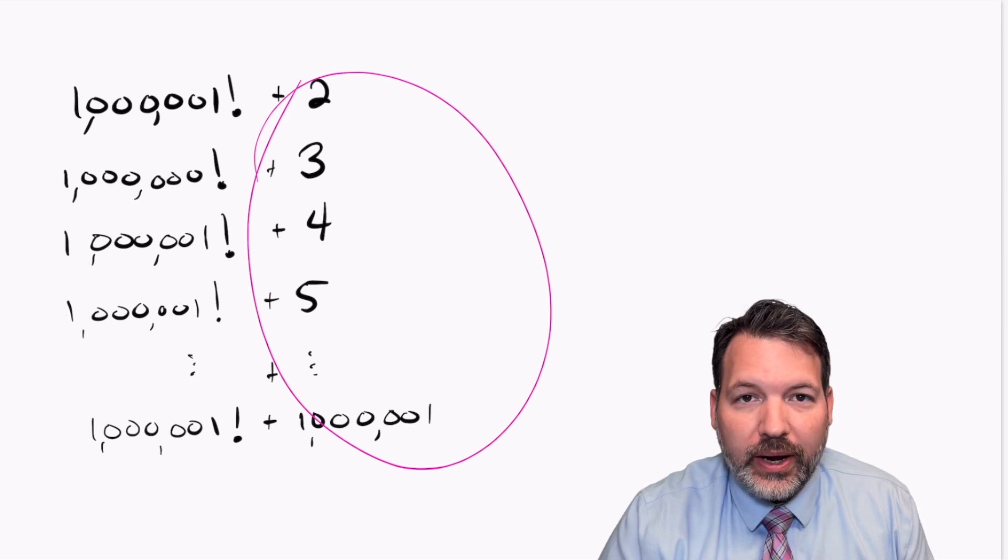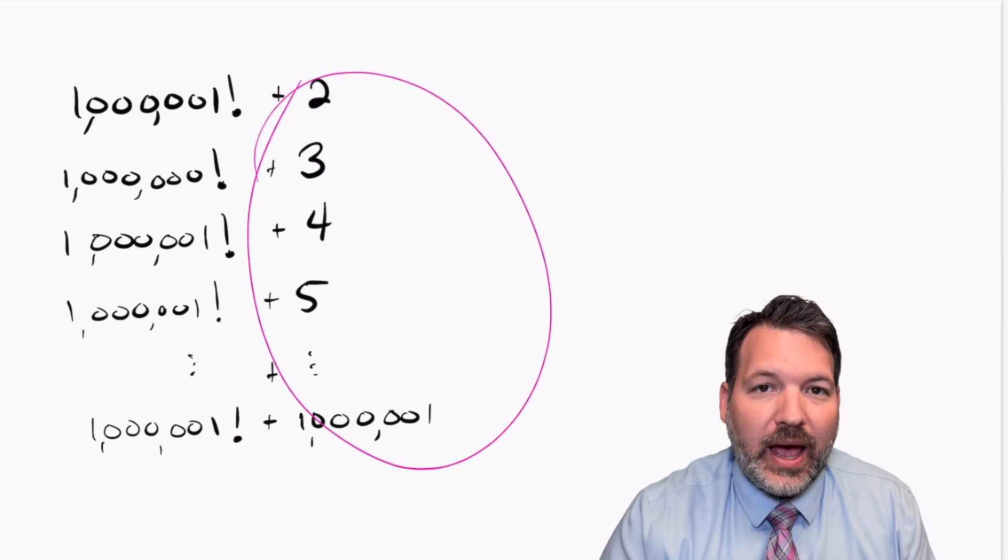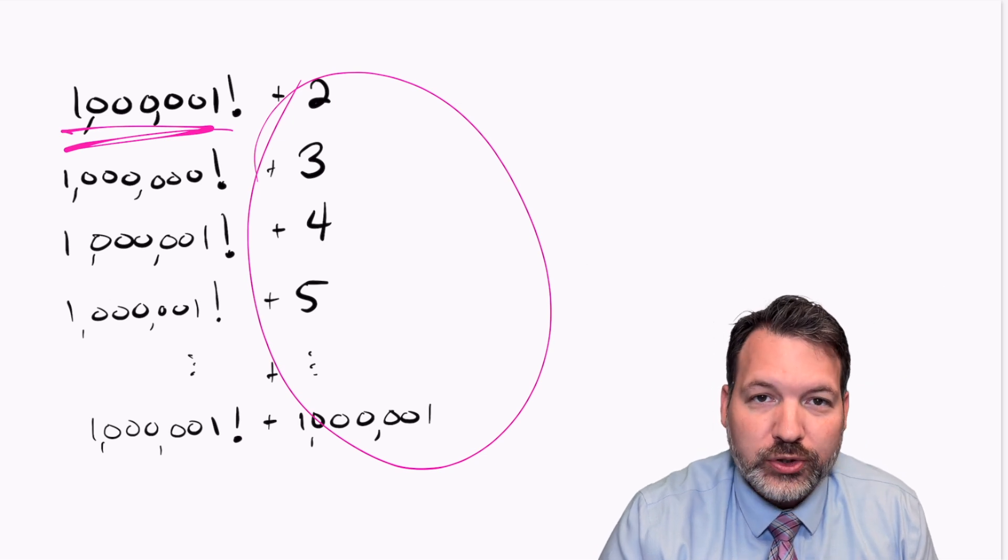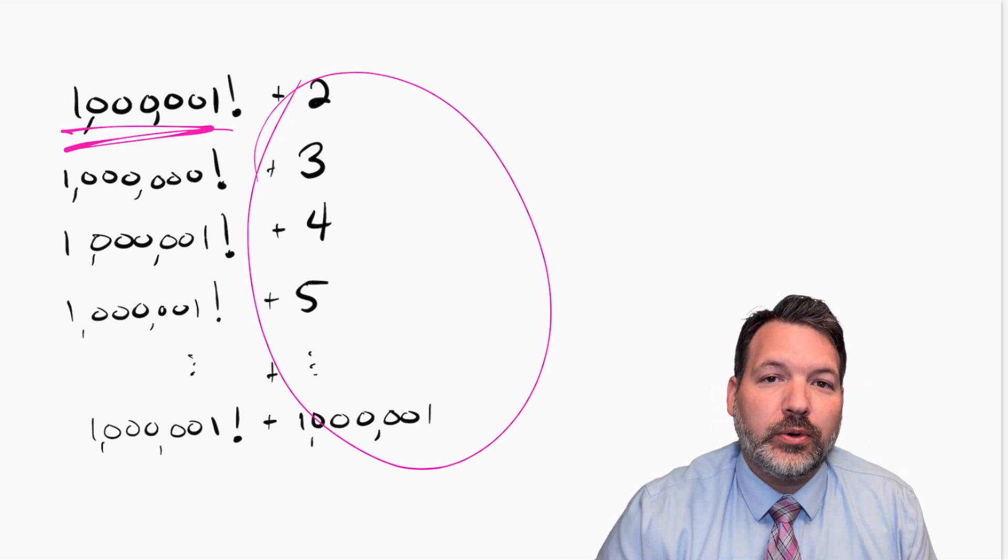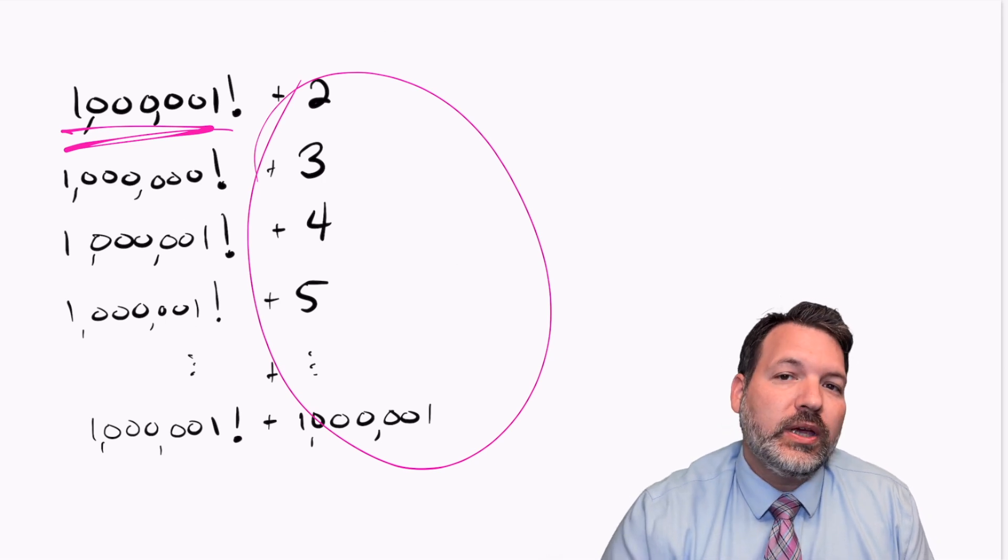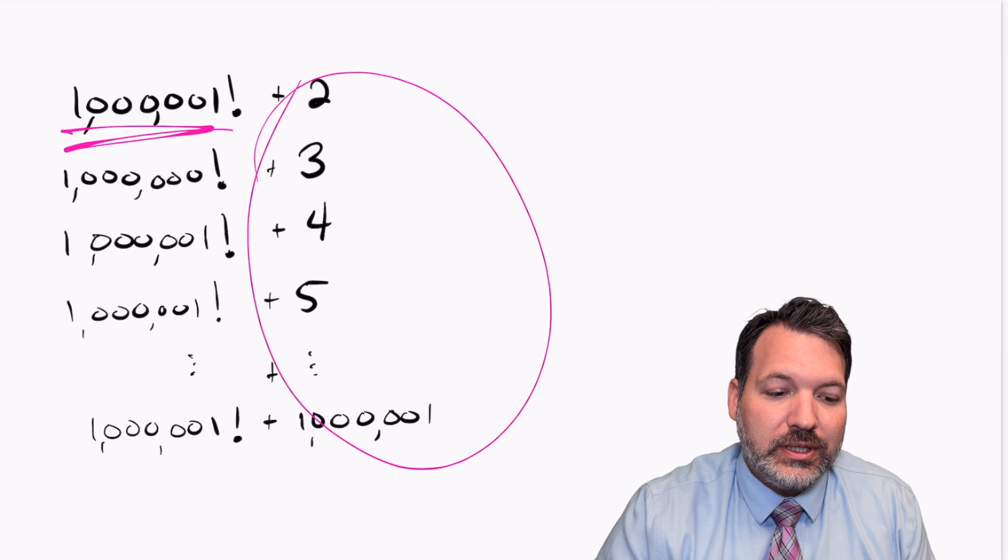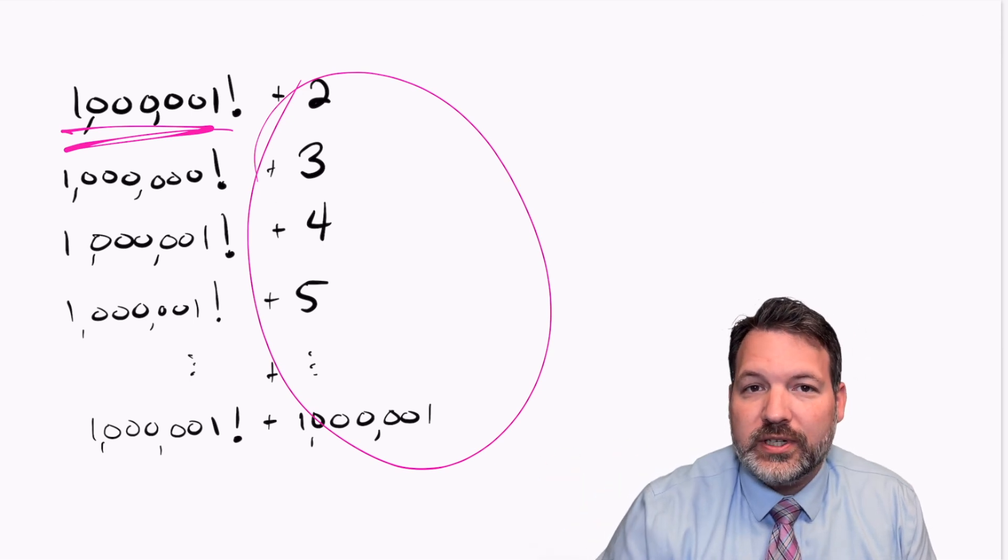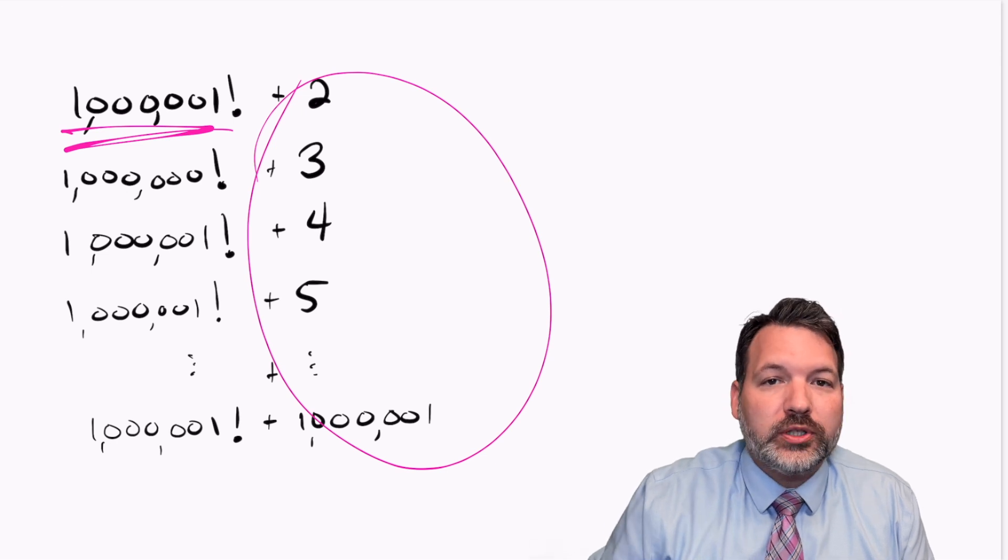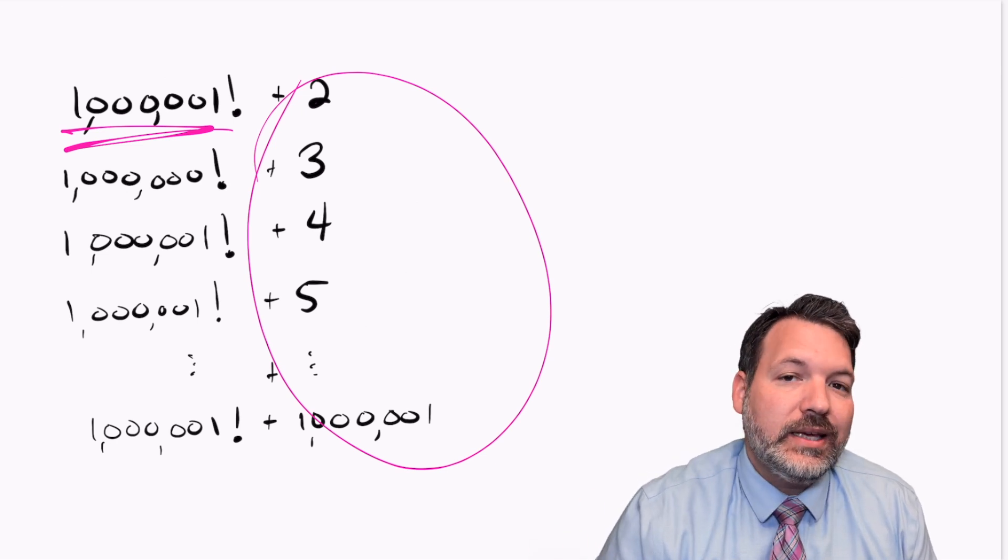Now, one thing to keep in mind, of course, is there's probably a gap of this size way before you get to 1,001 factorial, because 1,001 factorial is just an absolutely gargantuan number. But the fact that we can construct these out of factorials guarantees that if you go far enough down the number line, you are guaranteed to get a gap of any arbitrarily large size you want, at least that large.